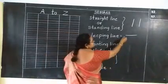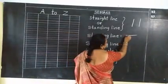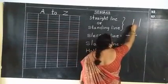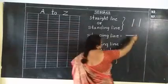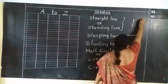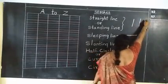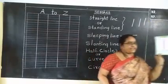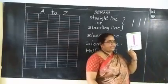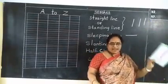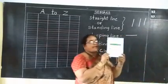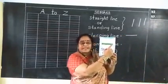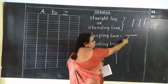Top line sleeping line. This is sleeping line. The first one is straight line, and this is sleeping line. What is this line called? Sleeping line. What is this? Sleeping line.